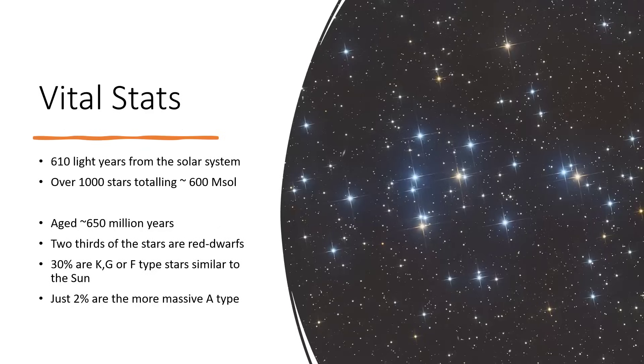It's about 610 light years away from us. Measuring the distance to these things always has a certain amount of variability, so it depends which catalogue you look in as to exactly what number you get. We think that there are around about a thousand stars in this group, adding up to just about 600 times the mass of our sun.